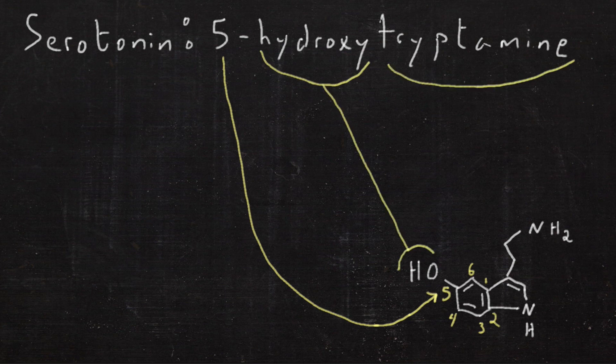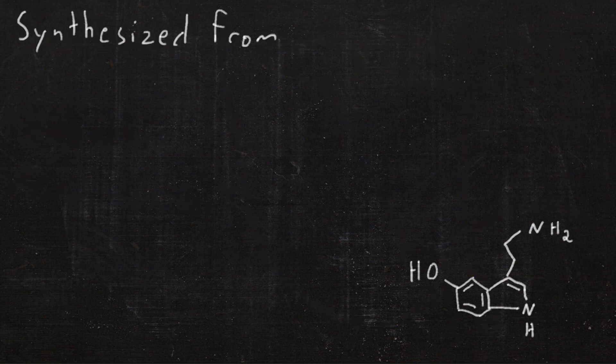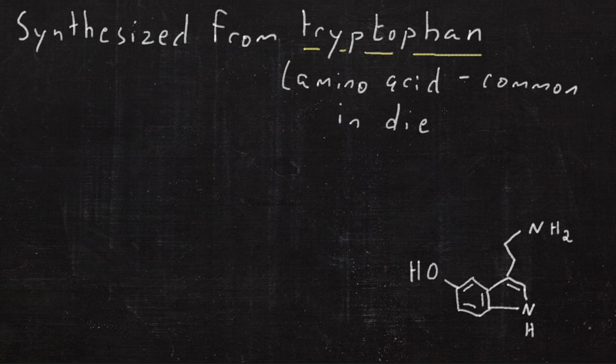Its chemical name is 5-hydroxytryptamine. It's a monoamine neurotransmitter. It's synthesized from tryptophan, which is an amino acid common in diet, especially in turkey, makes you sleepy after Thanksgiving.